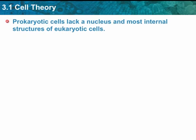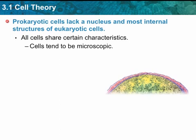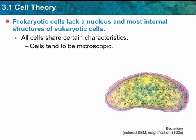Prokaryotic cells lack a nucleus and most internal structures of eukaryotic cells. Eukaryotic cells have organelles and prokaryotic cells do not. All cells do share certain characteristics — they are microscopic. Bacteria and prokaryotic cells are generally around ten times smaller than eukaryotic cells, but all of them are microscopic.